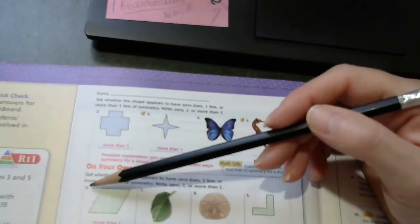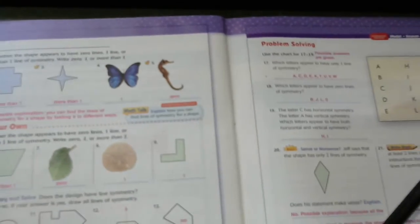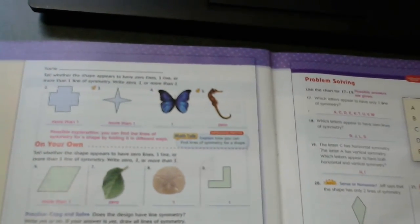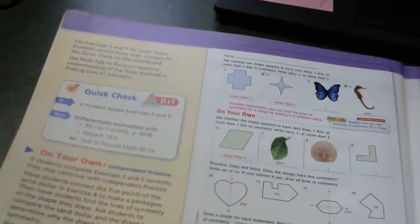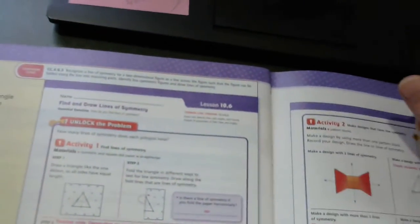Now, and on your own, you'll do six through twenty-two. And then when you're finished with that, please do ten six out of your practice book. Thank you.